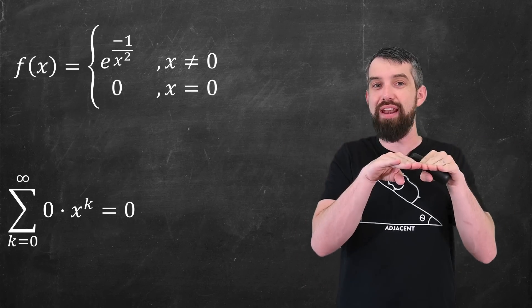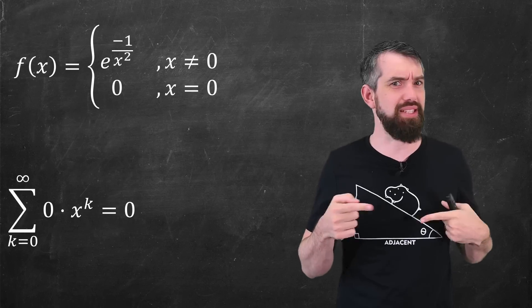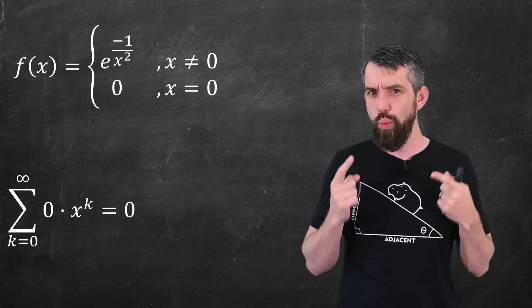But e to the minus 1 over x squared isn't completely flat. So what do we have happening?